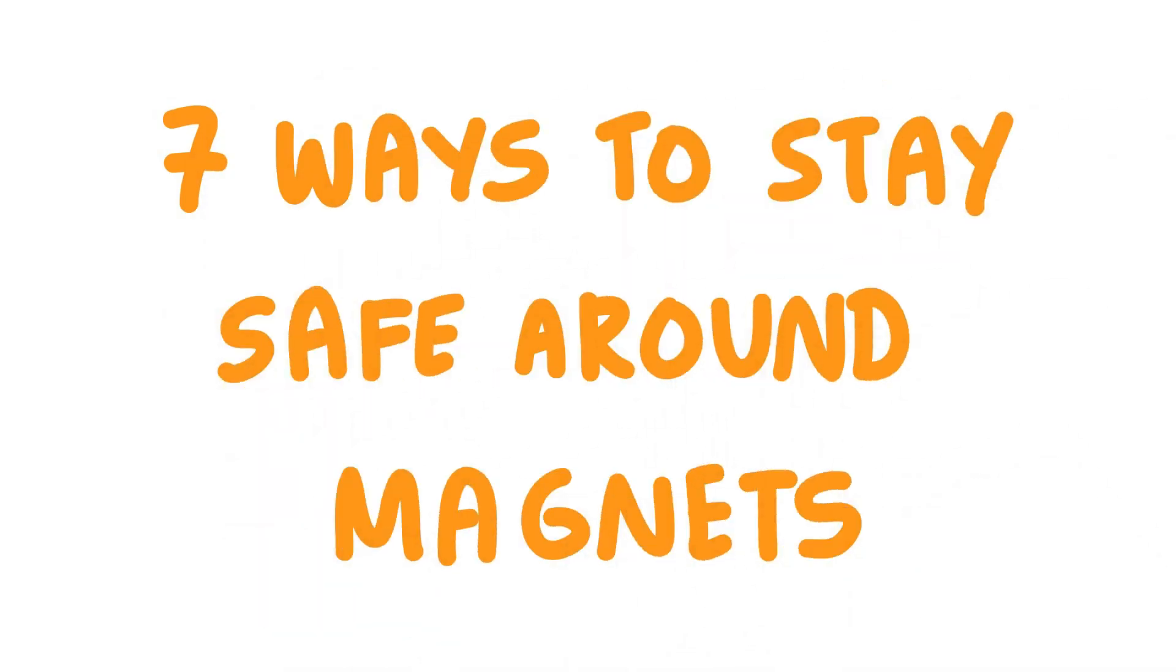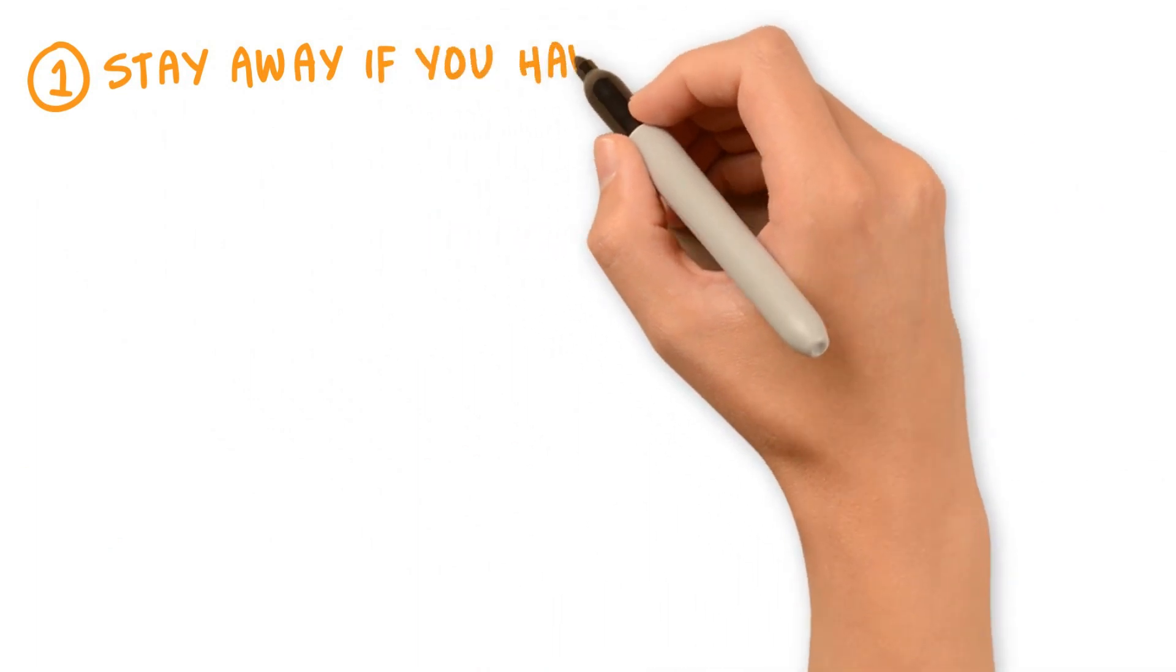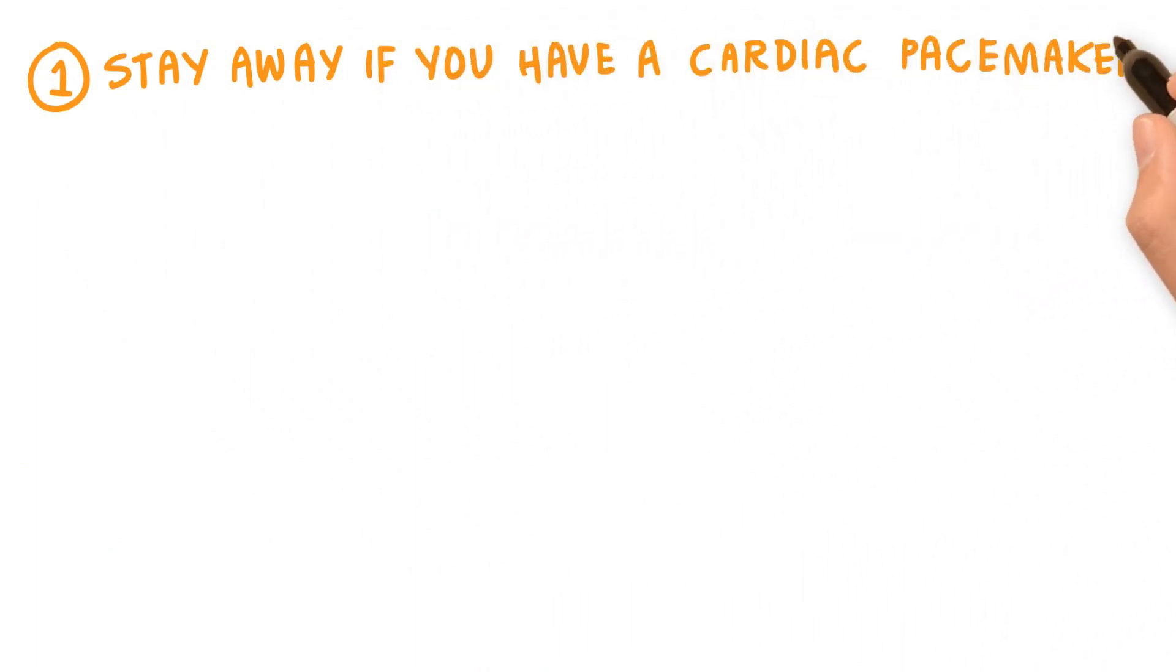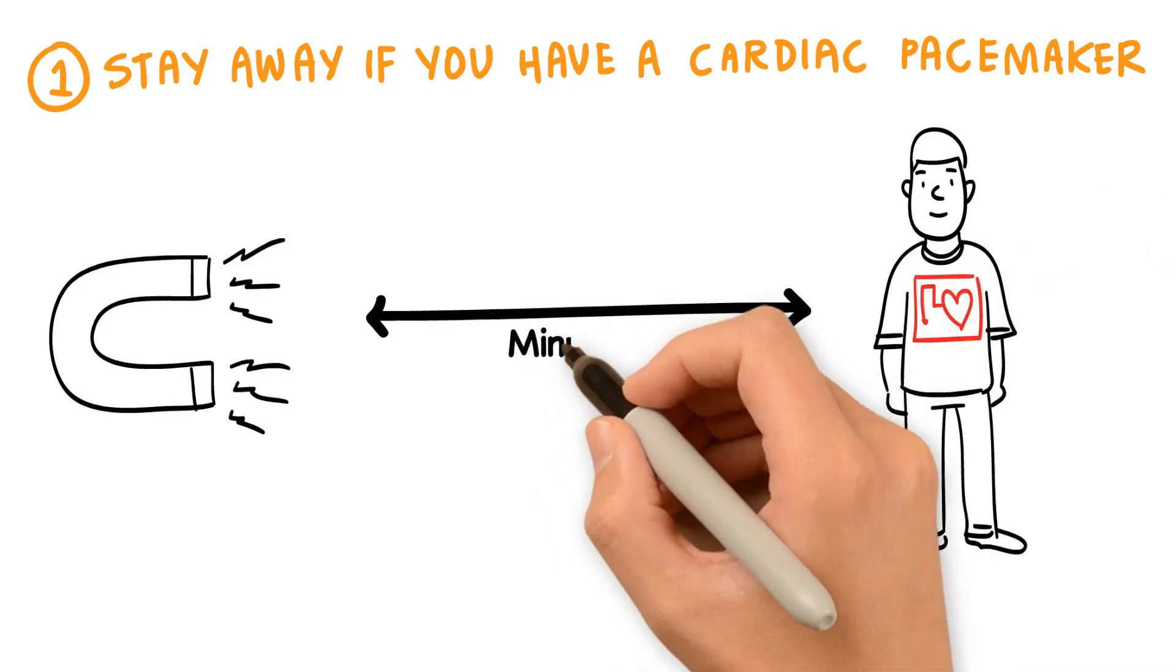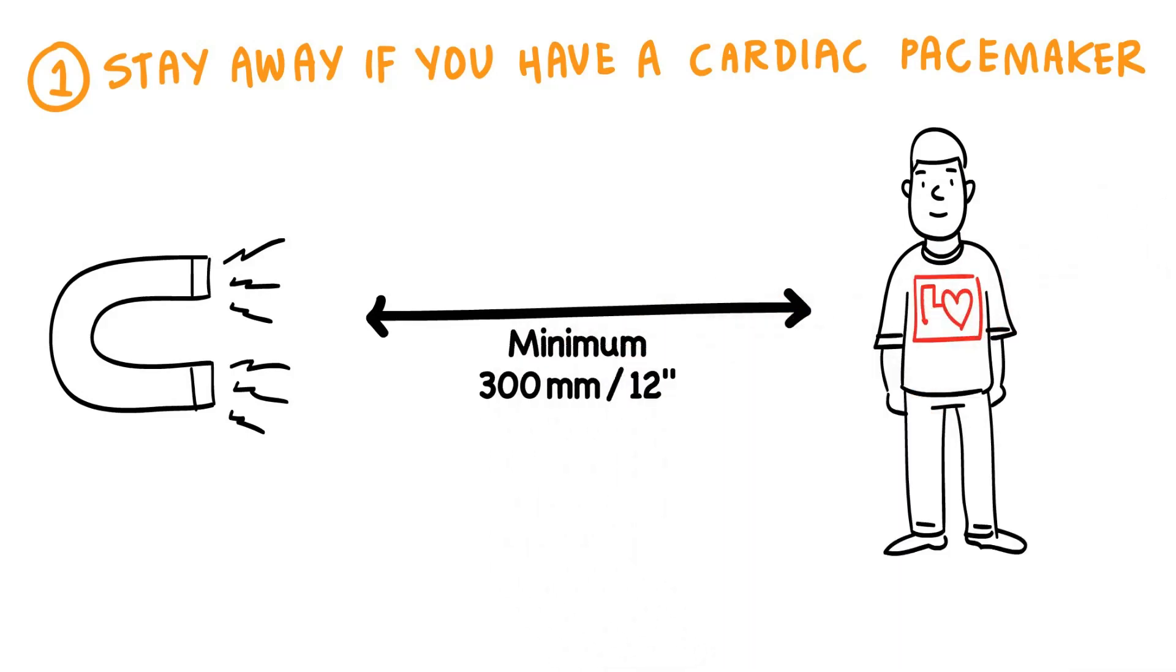Here are seven ways to help you stay safe around magnets. Magnetic fields can have very detrimental effects on pacemakers. If you have any such sensitive devices implanted in your body, you must never come within 300 millimeters of magnets.